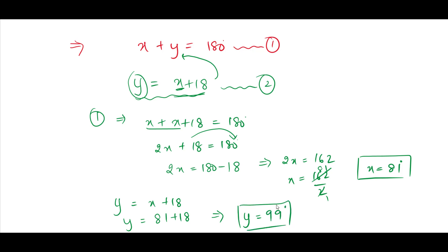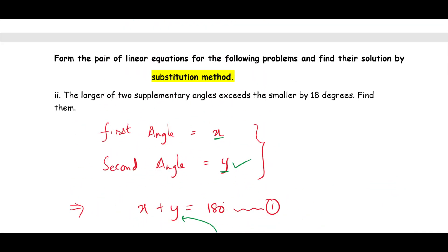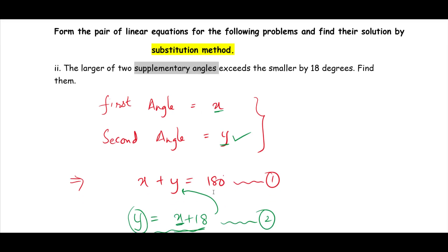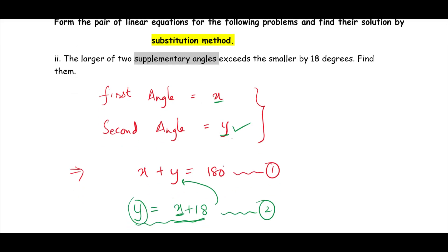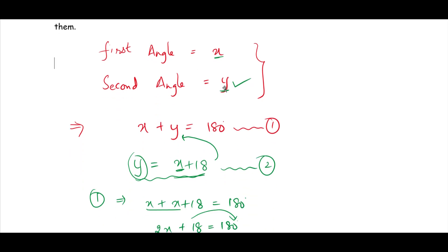This is how you solve this question. Let me repeat the conditions. They gave the condition as supplementary angles. I assumed the two angles as x and y. If you add these two, we get 180 degrees — that is the first condition. The next condition is the larger angle exceeds the smaller angle by 18 degrees.